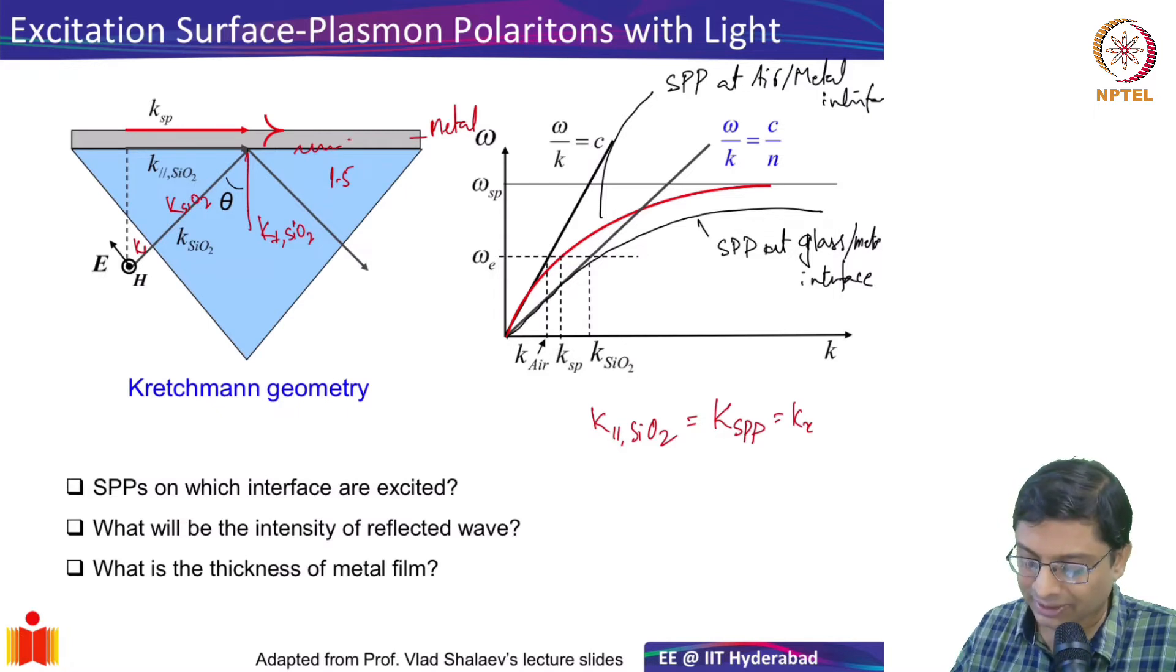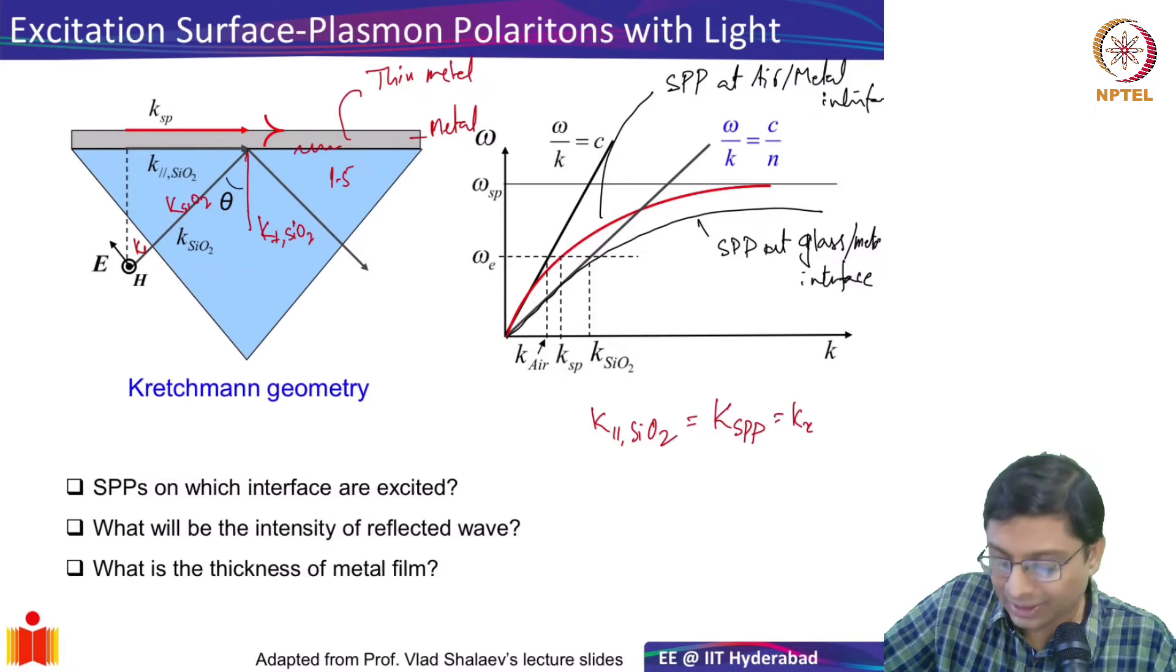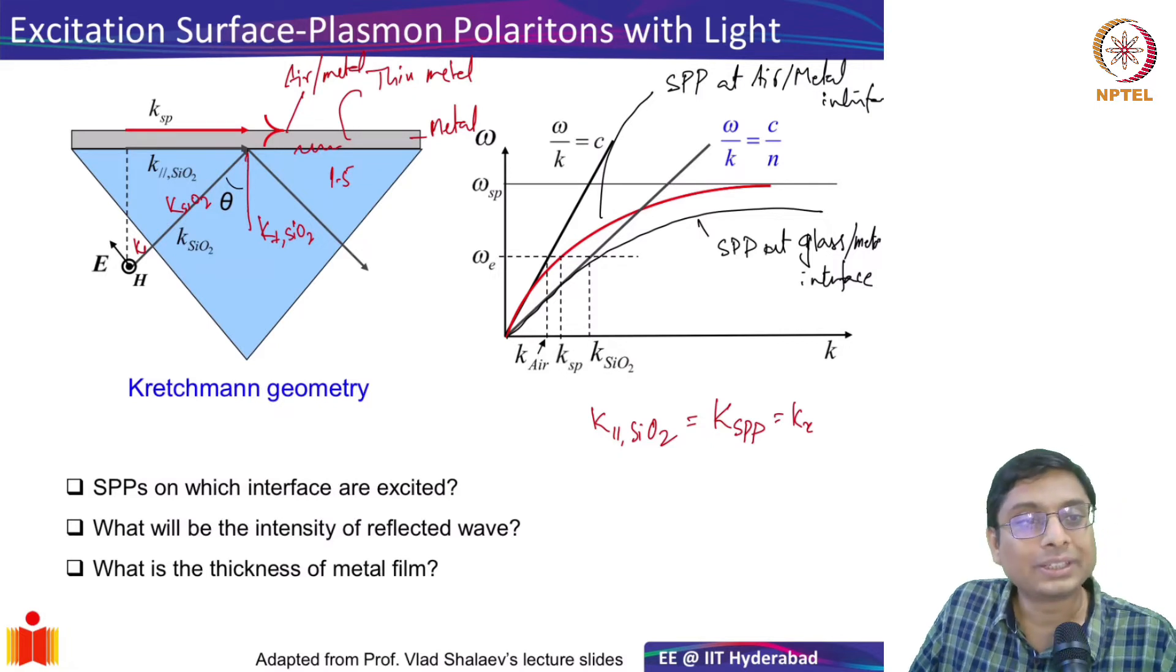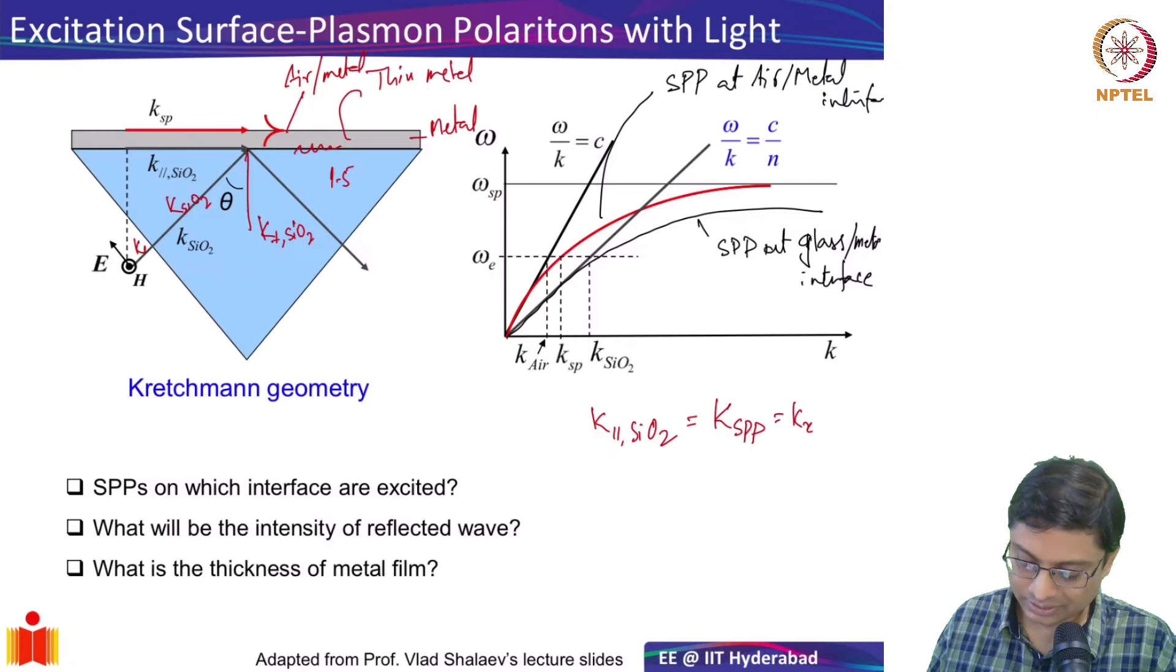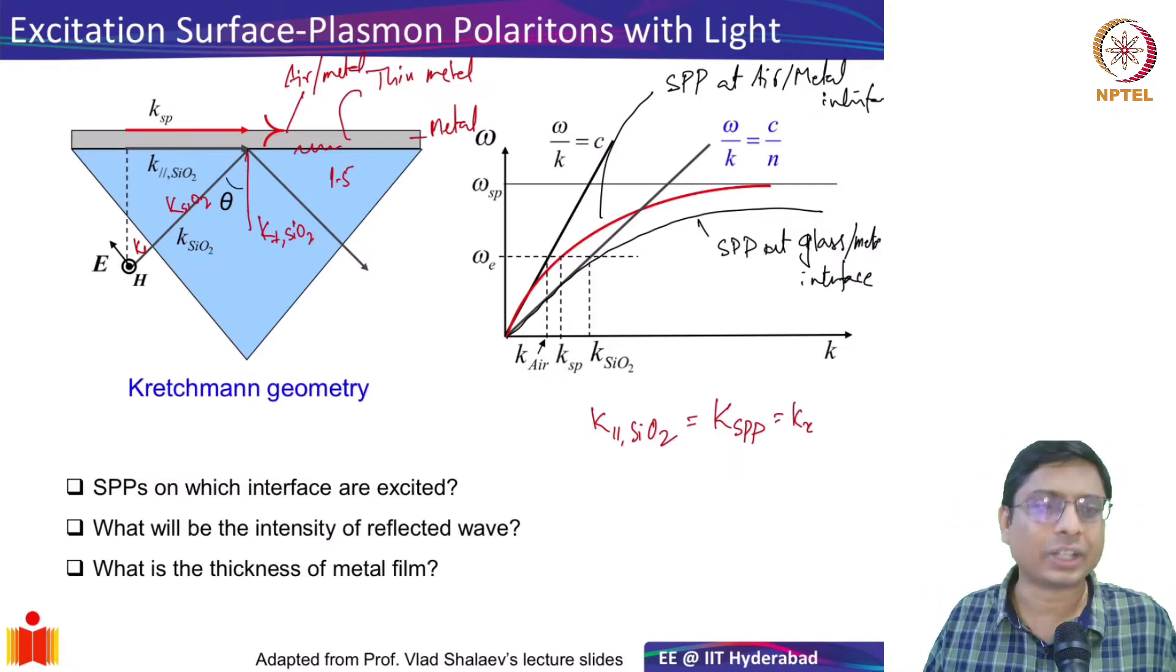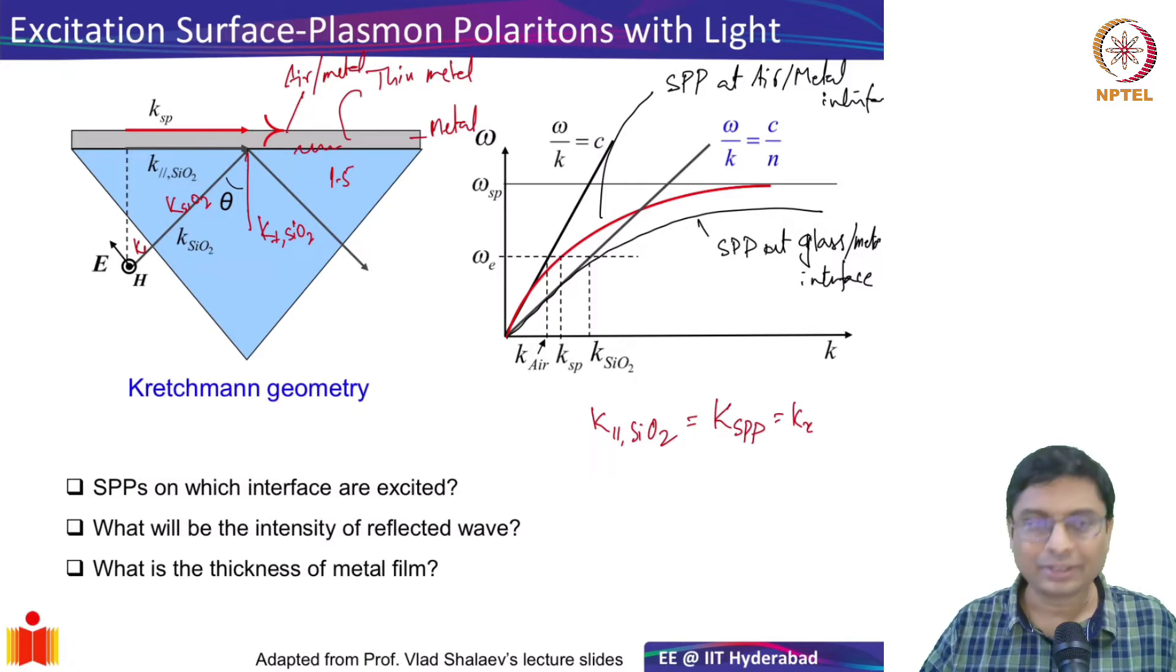But if your metal is sufficiently thin, in thin metal we saw if metal thickness is 10 nanometers, some amount of electromagnetic energy gets tunneled through the metal. It gets tunneled and can actually excite a plasmon at the air and metal interface. That is a very important point to note. If your metal thickness is very large, all the energy will get attenuated and the SPP will not be excited. But if your metal thickness is small, say 10, 20, 30 nanometers for typical silver and gold films, some of the energy will get coupled to the air-metal interface and excites a plasmon on that.